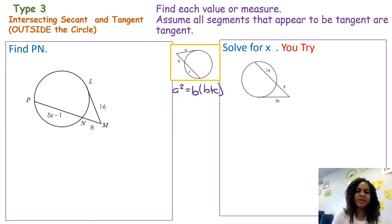Our last one we're going to look at is type 3, intersecting secant and tangent outside of the circle. I have the formula here in the middle for you to look at. A, I'm going to go ahead and label that, that is by itself. That would be LM. B will be right here on the outside of the circle, and C is on the inside of the circle.